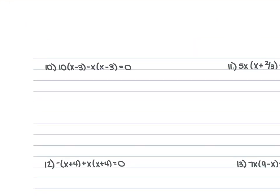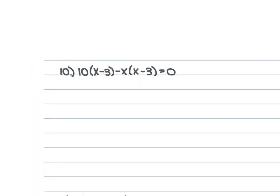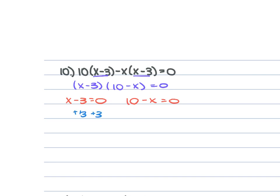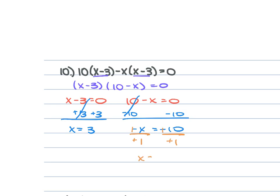For problem 10, we have 10(x − 3) − x(x − 3) = 0. The two parentheses are the same, so we factor as (x − 3)(10 − x) = 0. Setting each equal to 0: x − 3 = 0 gives x = 3. For 10 − x = 0, subtract 10 from each side: −x = −10, then divide by −1, giving x = 10. So x = 3 and x = 10.